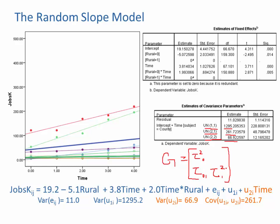Essentially, if the slope variance comes out to zero we don't need it — and that's pretty much how you decide. You can see here this value is quite a bit above zero. It's smaller than the intercept variance but it's still worth keeping in there. If that variance is non-zero we need to keep it. Sometimes it won't come out as exactly zero — it might be something like 0.0004. If it were that small I would remove it, compared to an intercept variance of 1295.